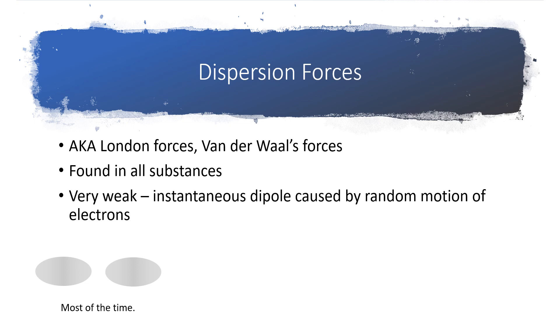London dispersion forces are due to the random motion of electrons. So dispersion forces will be found in all substances. Let's say that you have a molecule whose electron distribution looks like what we have down here in the lower left hand corner, where the electrons are randomly distributed and evenly distributed throughout the entire molecule for most of the time.